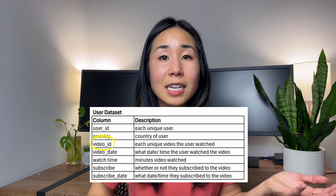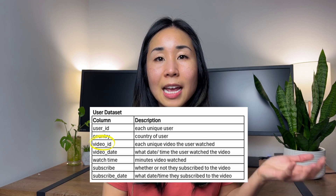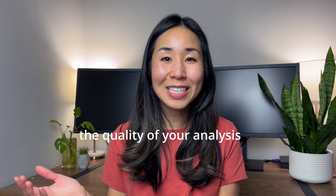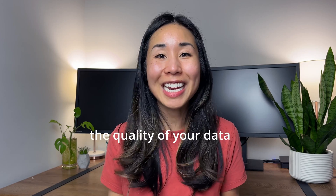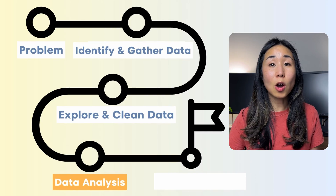For example, when looking at the user dataset, I may see that there are videos listed that I can't find in the video dataset — that would be a data quality issue, which I then need to follow up with the team sending me the data. I fix all these issues even before I analyze the data, because the quality of your analysis will only be as good as the quality of your data.